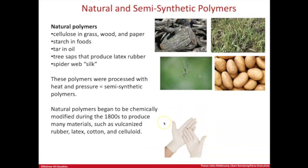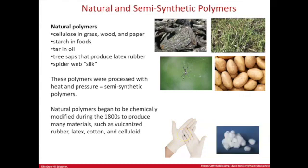Latex rubber is an example: the origin of latex rubber was going into the Amazon, finding an exotic rubber tree, extracting the tree sap, and taking it back — back then to England. Scientists said, well, can we just skip the part where we have to go to the Amazon and make this in a lab? The beginning was discovering that when you heated rubber extracted from the tree under pressure, you could get a better version: vulcanized rubber. This led to latex, which we have for latex gloves. Even cotton, a natural product, is heated and treated with heat and pressure to make a softer version, and scientists said, if we're already treating it in a lab, can we just start with different compounds?